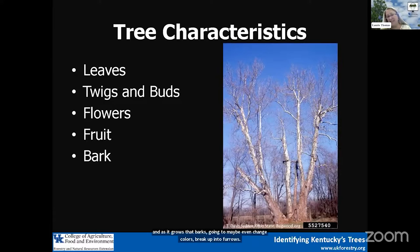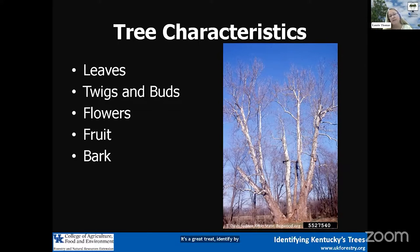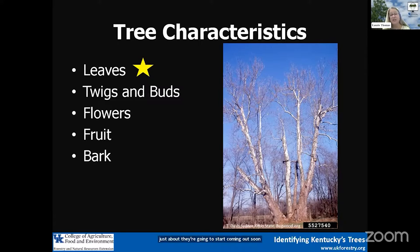This is a great example — I'm sure everybody knows that is an American sycamore. It's a great tree to identify by bark. If you're out in the landscape and you see those white branches up in the canopy, you know that's an American sycamore. You don't need to see the leaves, fruit, or anything else. So it's a good one to do by bark, but a lot of the rest aren't. Today we're going to focus on leaves, and they're just about starting to come out soon.